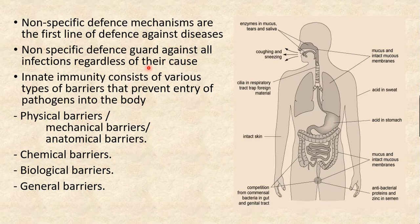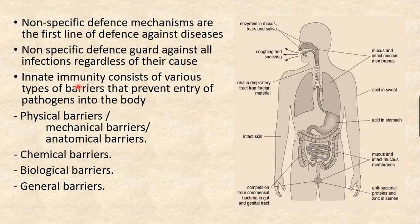Plants and lower animals majorly rely on this non-specific defense mechanism because they do not possess the specific defense mechanism — that is, lymphocyte cells and similar components. This non-specific defense mechanism works against a wide variety of invaders, such as all types of microorganisms. Innate immunity consists of various types of barriers that prevent the entry of pathogens into the body.